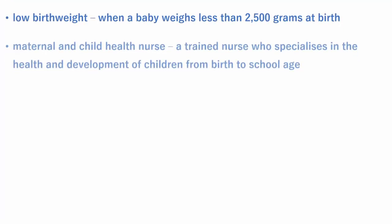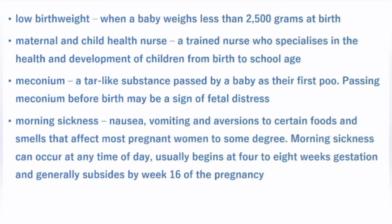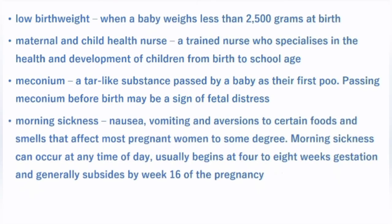Meconium is a tar-like substance passed by a baby as their first bowel movement. Passing meconium before birth may be a sign of fetal distress. Meconium aspiration syndrome is when a newborn breathes a mixture of meconium and amniotic fluid into the lungs at the time of delivery. Morning sickness is nausea, vomiting, and aversions to certain foods and smells that affect most pregnant women to some degree. Morning sickness can occur at any time of the day, usually begins at four to eight weeks of gestation, and generally subsides by the 16th week of pregnancy.